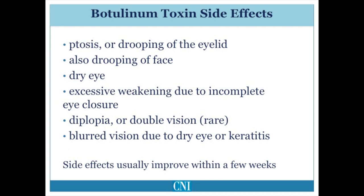Eye dryness may occur due to reduction in tear production caused by the injections, or due to incomplete eye closure of the injected eyelid caused by excessive weakening. Blurred vision may also occur due to excessive dryness or incomplete eyelid closure causing irritation of the cornea. Rarely, double vision may occur due to spread of the toxin to the muscles which help control eye movement. Excessive weakening of the muscles surrounding the lips may cause an incomplete seal when drinking, leading to leakage or rarely drooling. All of these adverse effects are transient and usually improve within a few days to a few weeks.